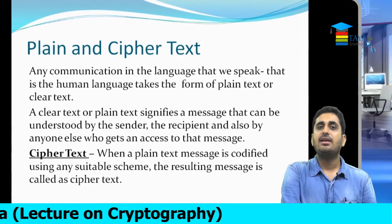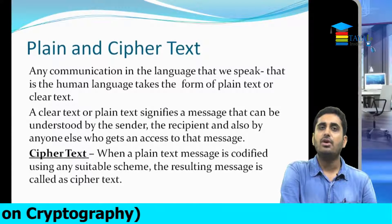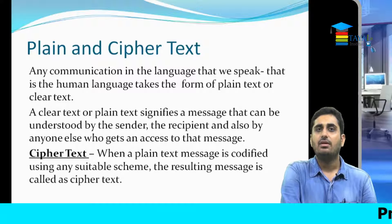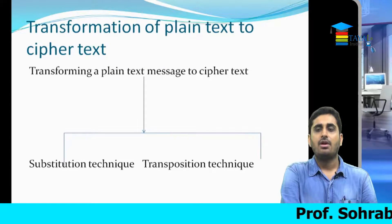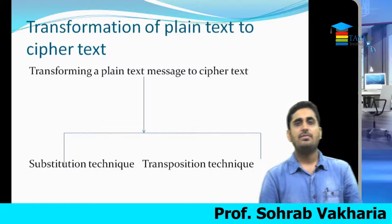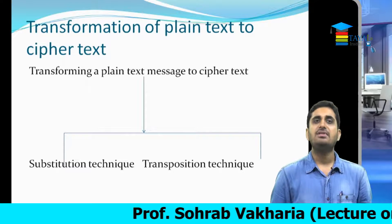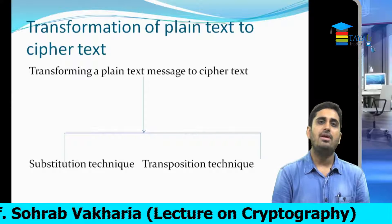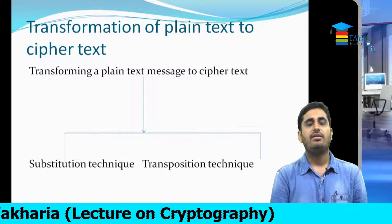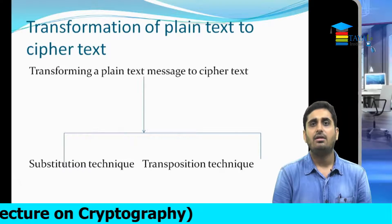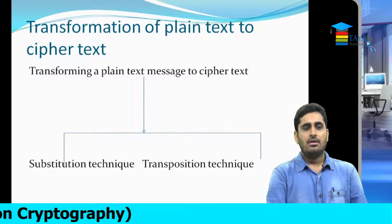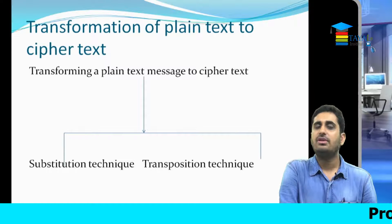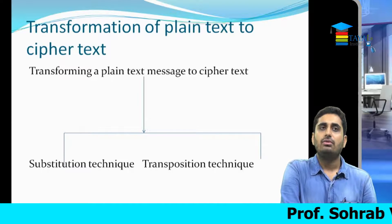An encrypted text is a text or written document in which the plain text has changed its form — a form which we cannot read or understand. To achieve encryption, there are two important techniques: the first is the substitution technique and the second is transposition. Julius Caesar, the king, used to send his messages by encrypting them using the substitution technique.